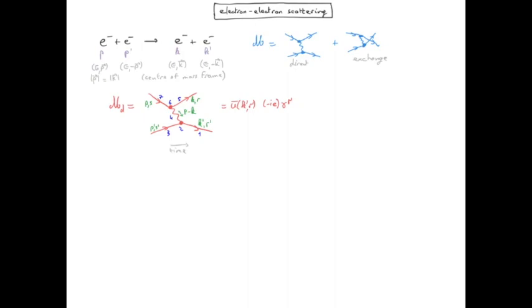And we know we have an overall energy momentum conservation between p, p dash, and k, k dash. Therefore, there is no need for this additional energy momentum for this vertex because it's going to be redundant. And it's going to be removed by rule number seven.